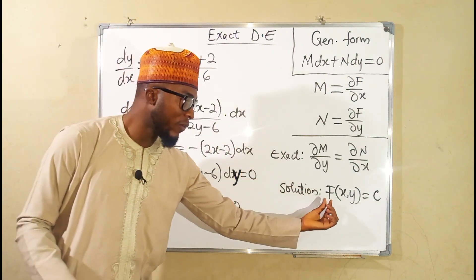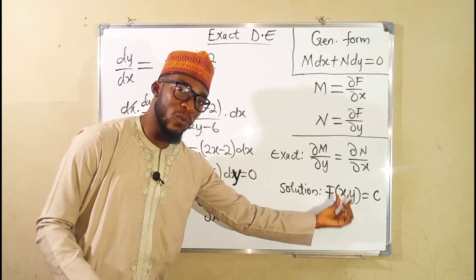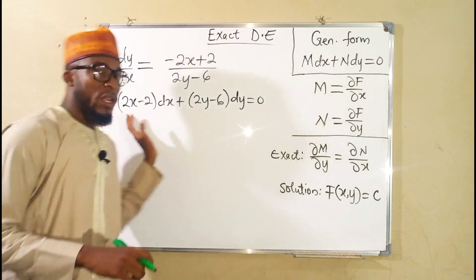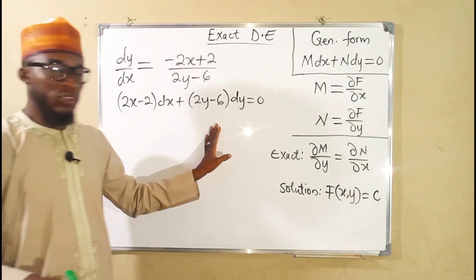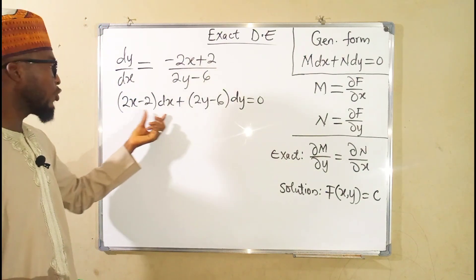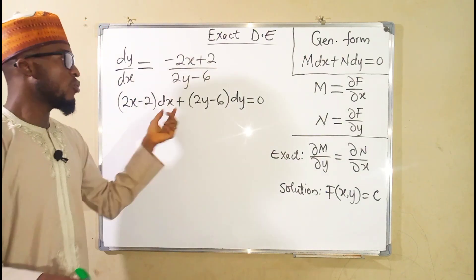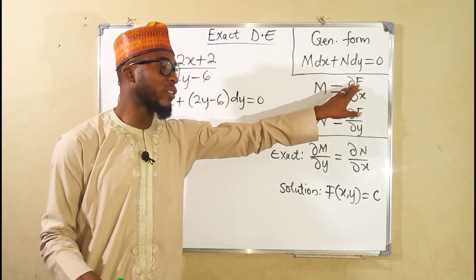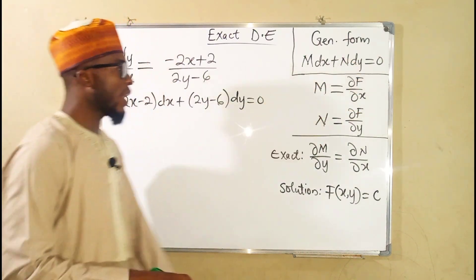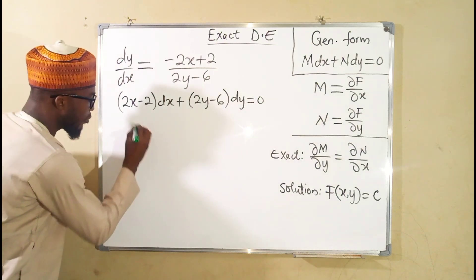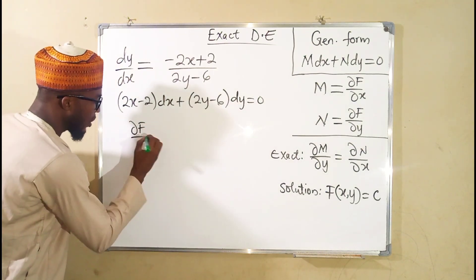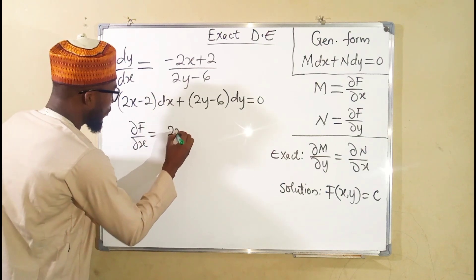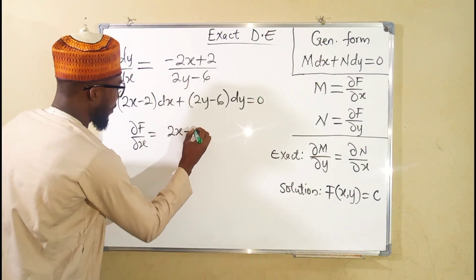Now let us find the solution. The solution is in the form f(x, y) equals some constant. The term connected to dx is M, and M is the partial derivative of f with respect to x. So the partial derivative of f with respect to x equals 2x minus 2.